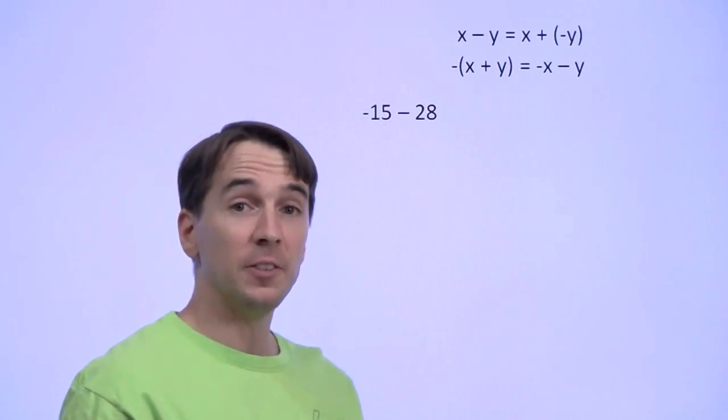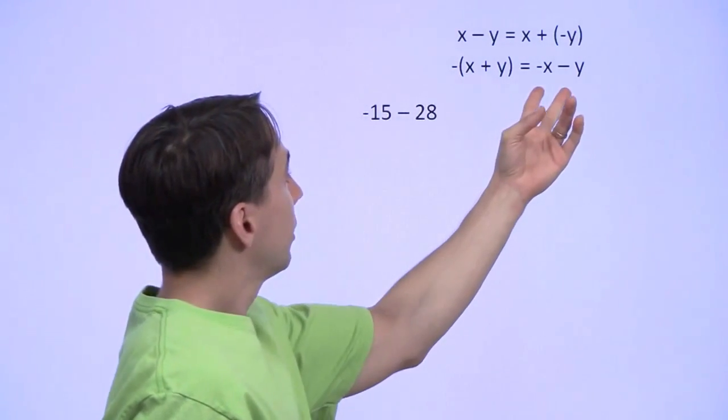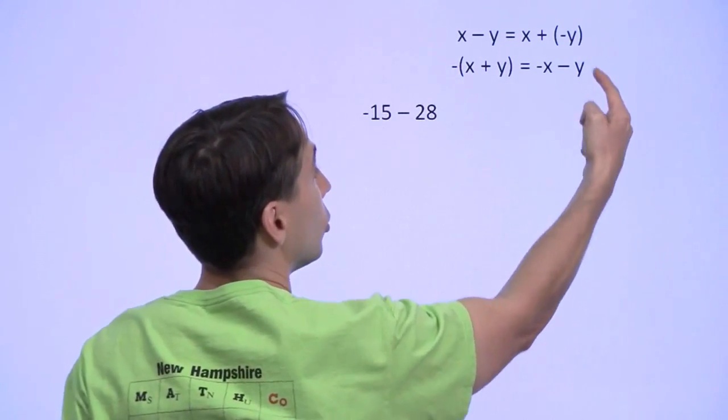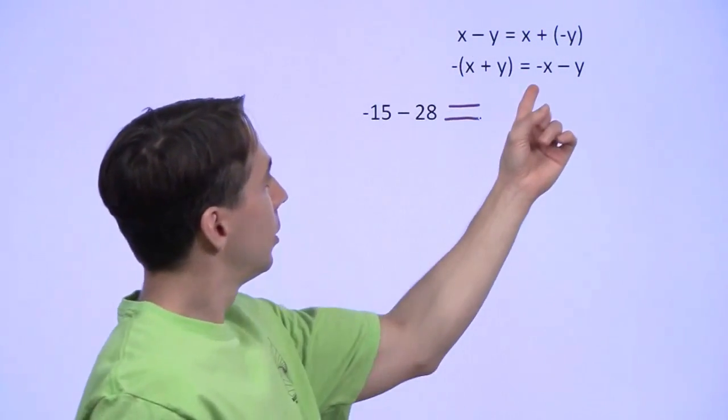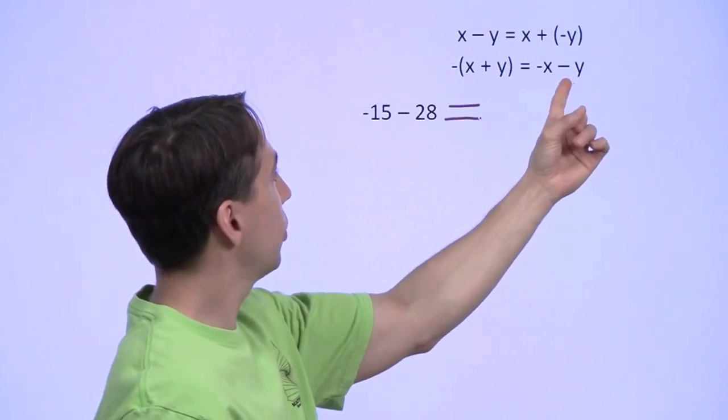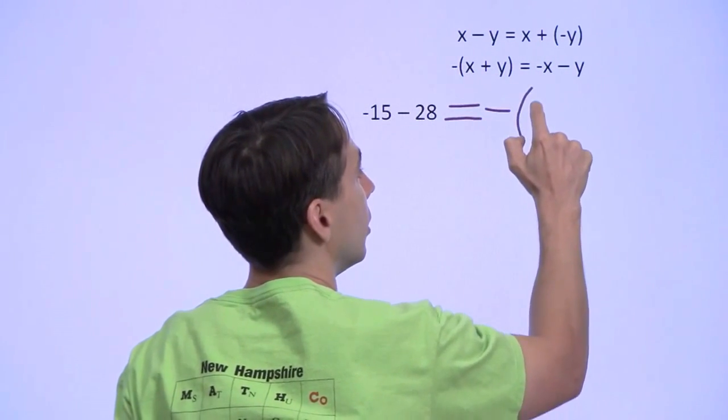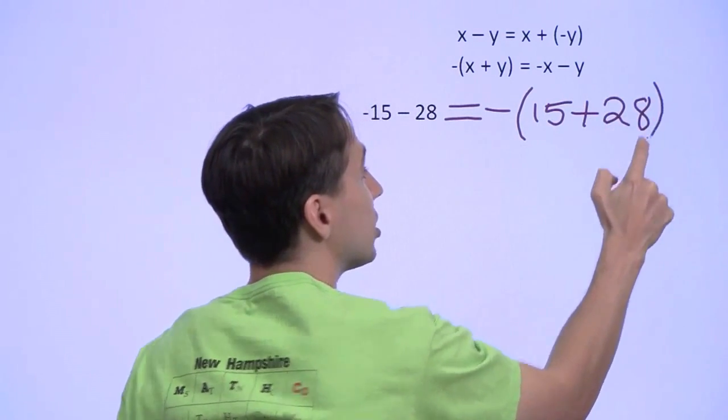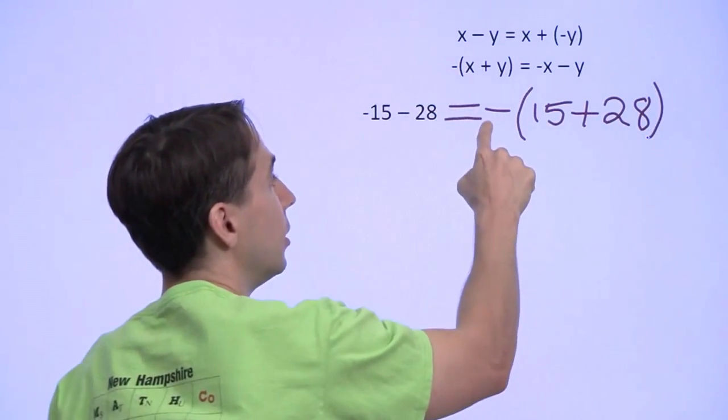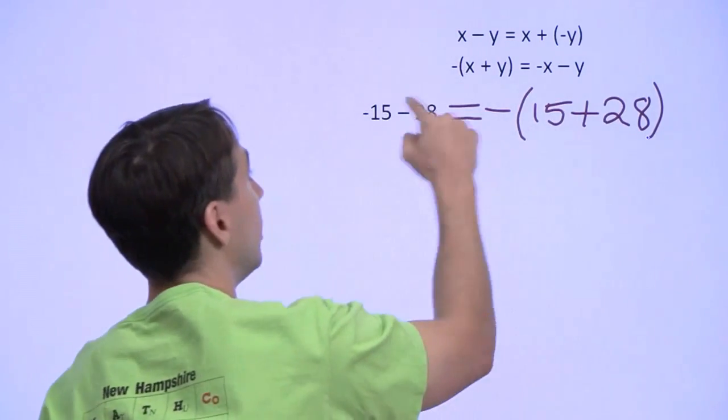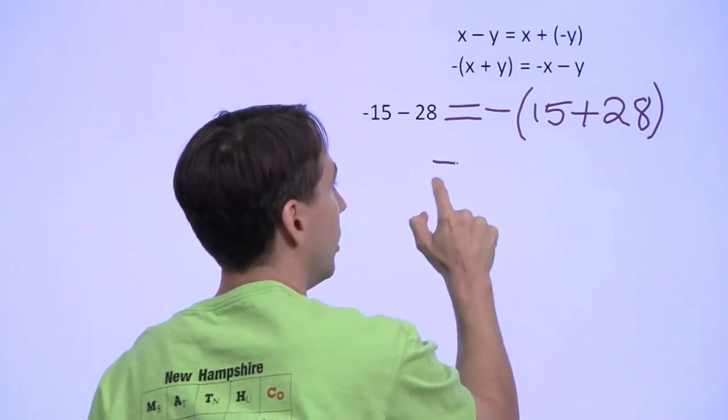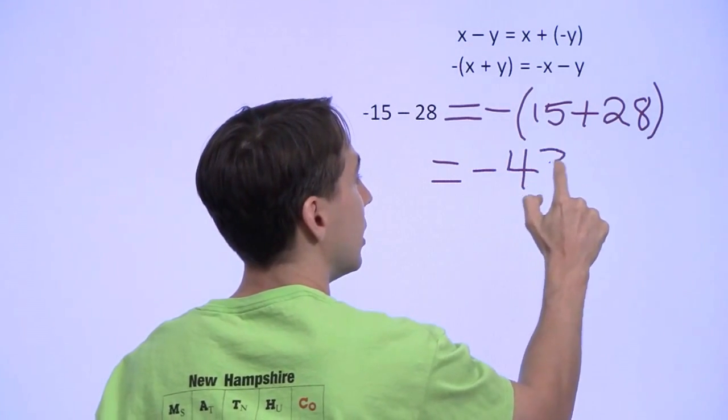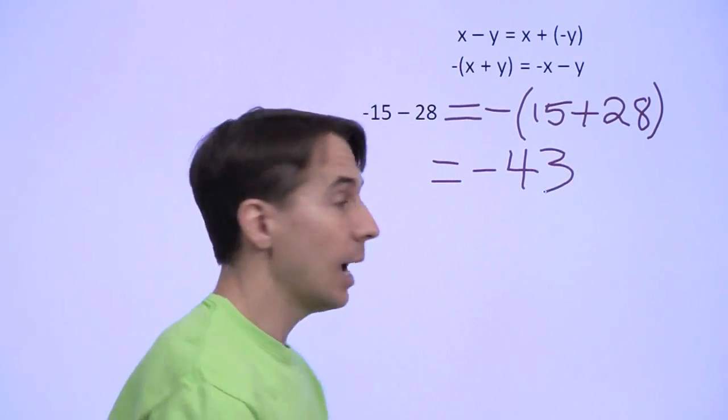Right here, we have negative 15 minus 28. That looks exactly like our distribution of negation here. We can just go backwards. Negative 15 minus 28, we go backwards, and that's going to be the negation of 15 plus 28. And we can check ourselves here by looking at it going this way. Negation of 15 plus 28, that's minus 15 minus 28. 15 plus 28 is just 43, so our answer is negative 43. And we're done with that one.